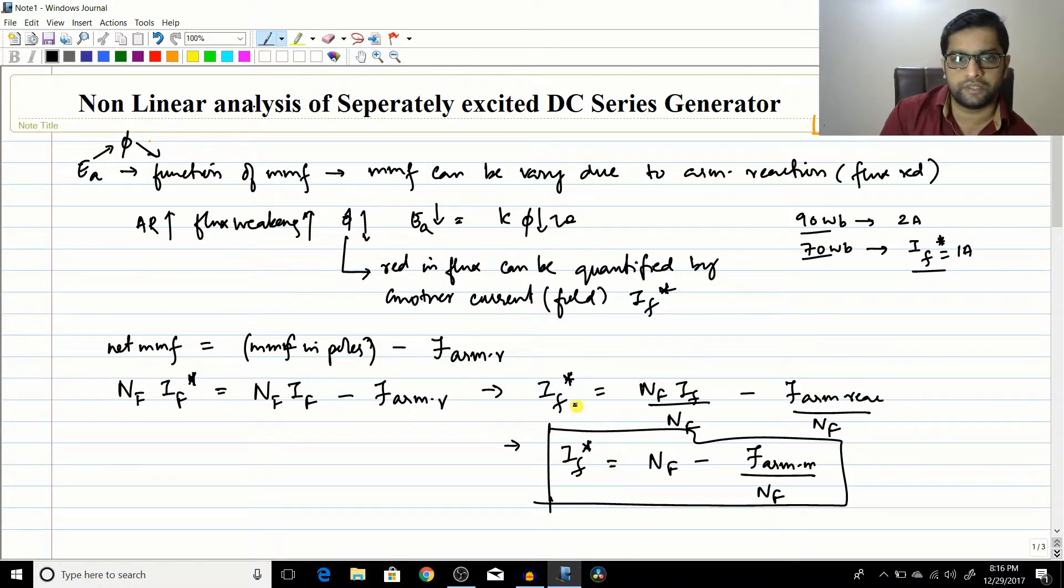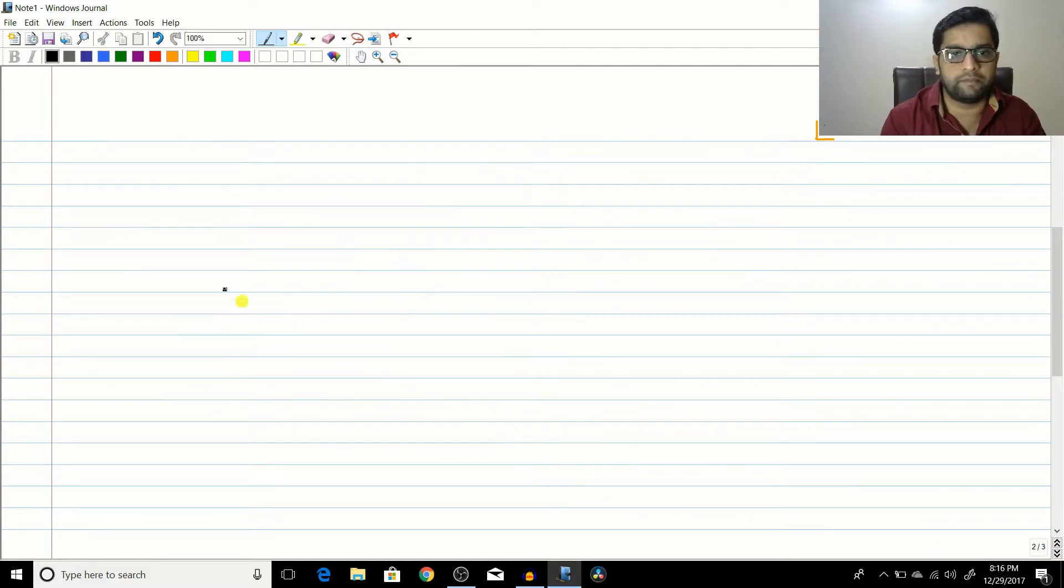Now not only this, you know that the flux also actually affects the speed. That was in case of the DC motor. Now corresponding to this IF star, how can you find the value of induced EMF? I told you that you can find from the magnetization curve.